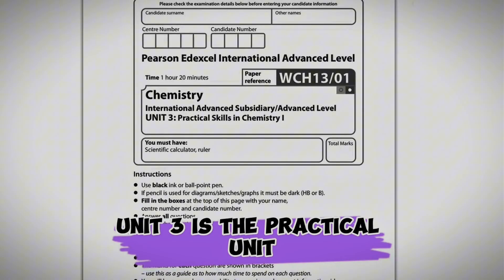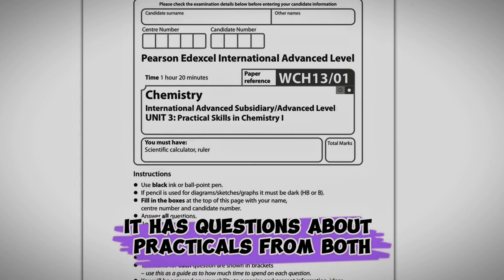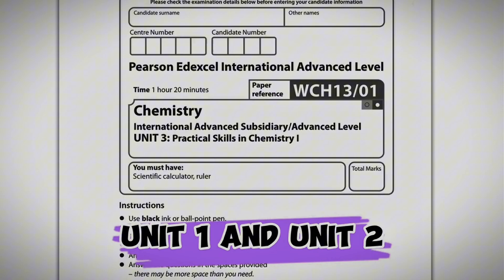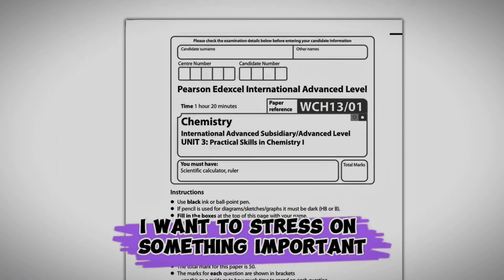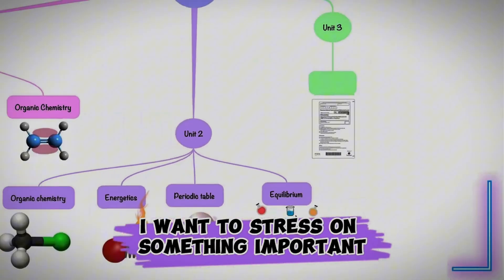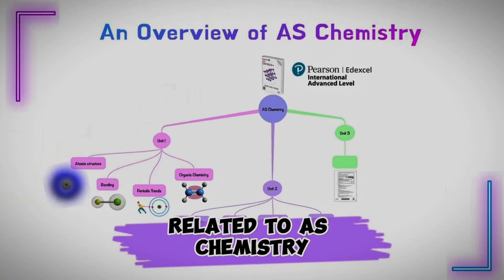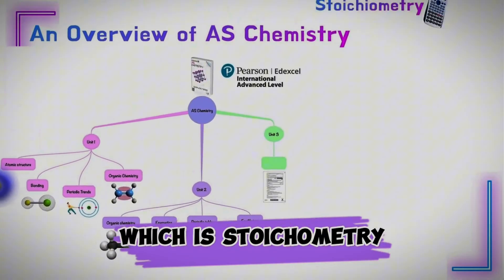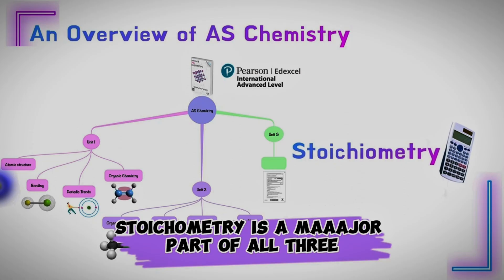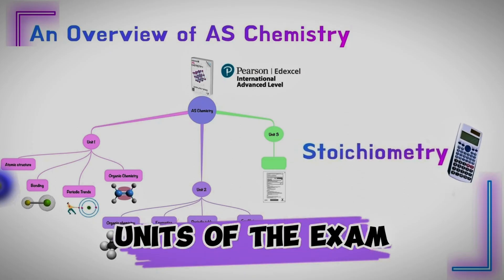Unit 3 is the practical unit. It has questions about practicals from both unit 1 and unit 2. I want to stress something important related to AS chemistry, which is stoichiometry.